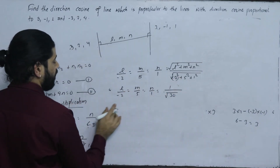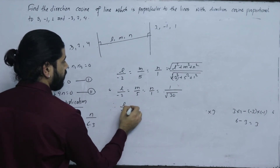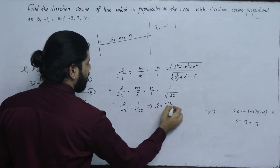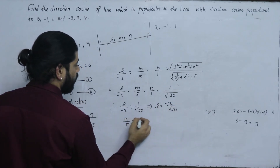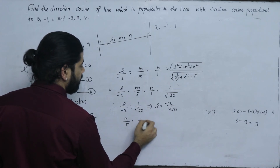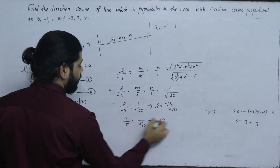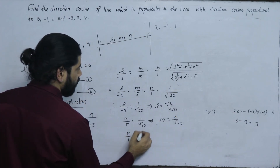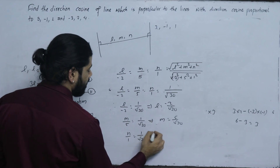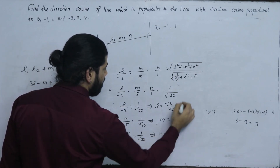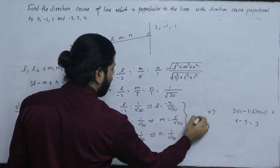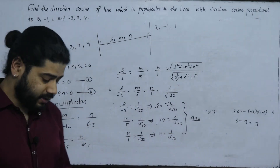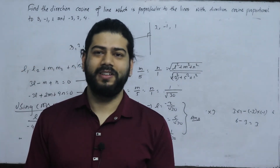Therefore the direction cosines are: L equals minus 2 upon root 30, M equals 5 upon root 30, and N equals 1 upon root 30. This is the answer. Thank you.